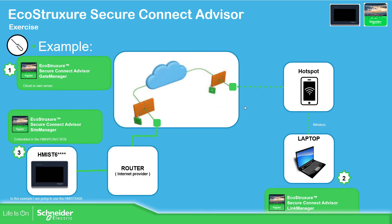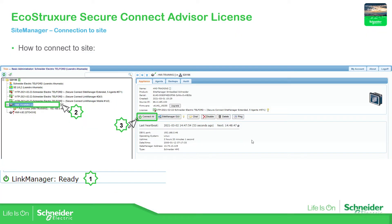So the first thing that we need to do, as we saw on the previous part of these presentations, is open the gate manager, connect with the link manager, and then connect to the site. This is how we connect the link manager — select the site that we want to connect and then connect.